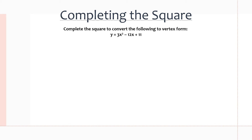First thing we want to do is common factor out a number — just a number without the variable — from the first two terms of our quadratic equation. So we can factor out a 3 from each term. We'll get left with x squared minus 4x in the brackets, and outside the brackets we have a plus 11.